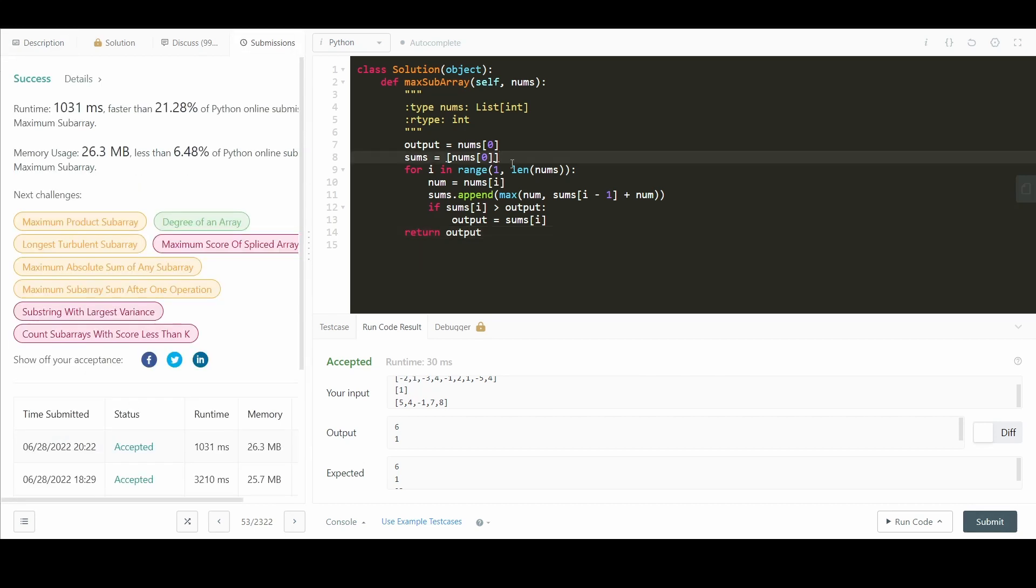So it's a pretty straightforward algorithm when you look at the code and one optimization for space that you can make like I said earlier is to use nums instead of creating a new variable sums.